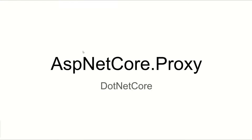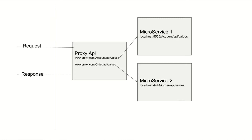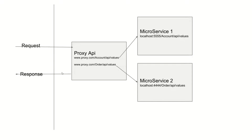Today we are going to explore ASP.NET Core Proxy, which is very handy when you are consolidating your microservice endpoints. In the diagram, you can see that we have a request and a middleware proxy API responsible for getting responses from the corresponding account microservice (microservice one) and the order microservice (microservice two). We will have a consolidated request and response from the proxy API, which is very simple to do in .NET Core.